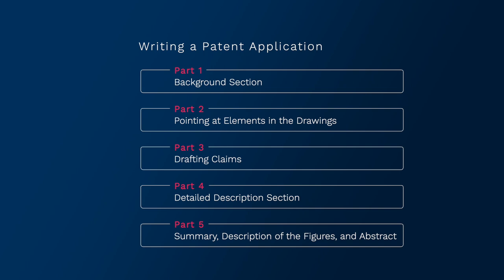Part two will be about labeling the reference characters in the drawings. Part three will be about drafting claims. Part four will be about drafting the detailed description. And part five will be about the summary section, description of the figures section, and the abstract.